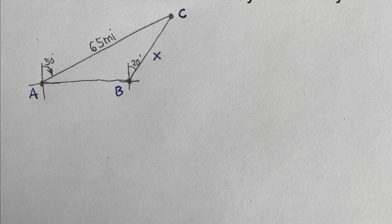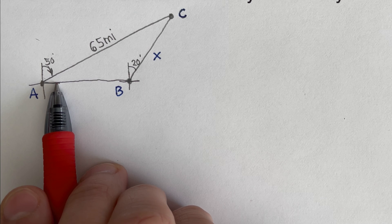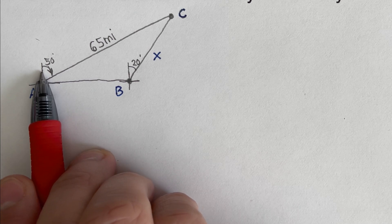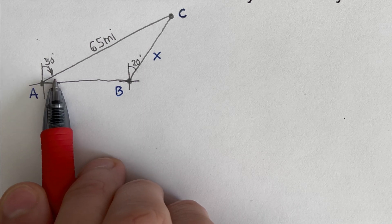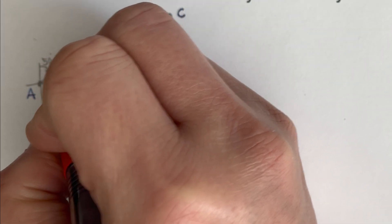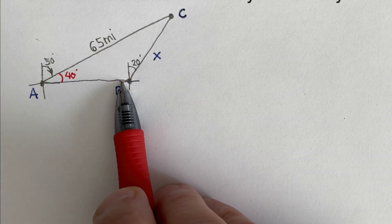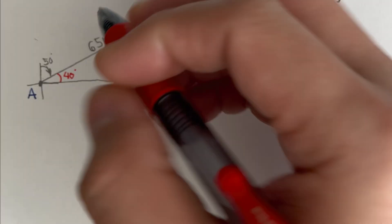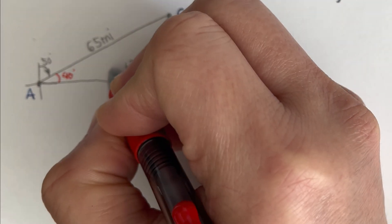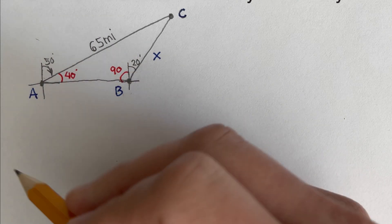Looking closely at the triangle, from east going north is 90 degrees. Since 50 degrees is measured from north, the complementary angle is 40 degrees. The angle at city B includes 20 degrees plus 90 degrees from west going north, giving us the angles we need to redraw this triangle.